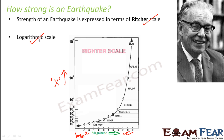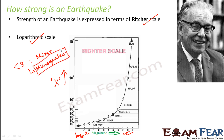Most earthquakes that happen are minor. Any earthquake with a magnitude less than 3 is considered a minor earthquake, also termed a microquake. In microquakes, humans sometimes cannot even feel the shaking. However, anything above magnitude 7 is a real major earthquake that can actually cause destruction of life and property.